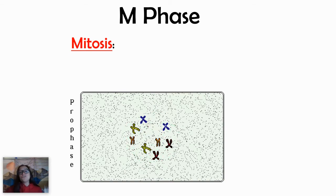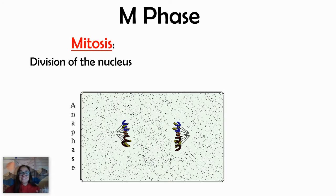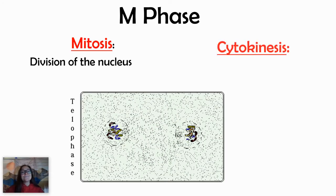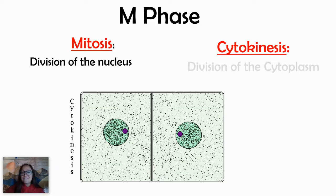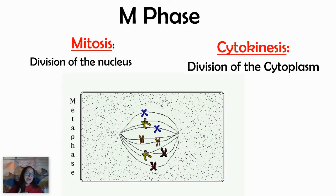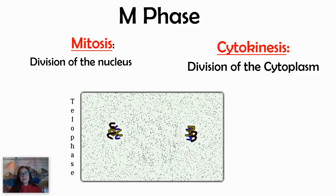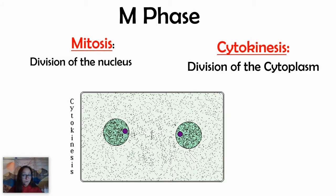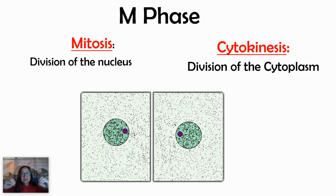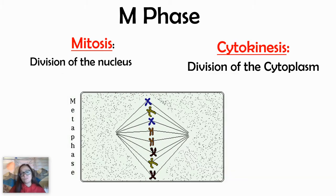M-phase has two parts. We have mitosis, which is the division of the nucleus, as you can see in this GIF, as well as cytokinesis, where the cytoplasm actually divides into two. The cytokinesis part happens differently if you are a plant cell or an animal cell. In a plant cell, because it has that rigid cell wall, it won't divide like an animal cell — instead, it would actually build a new cell wall between the two nuclei.